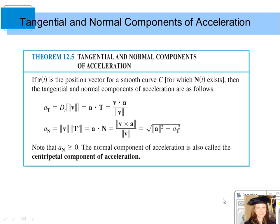The last part of section 12.4 deals with tangential and normal components of acceleration. Theorem 12.5 gives you the definition, or the formulas used to determine the tangential and normal components of acceleration.